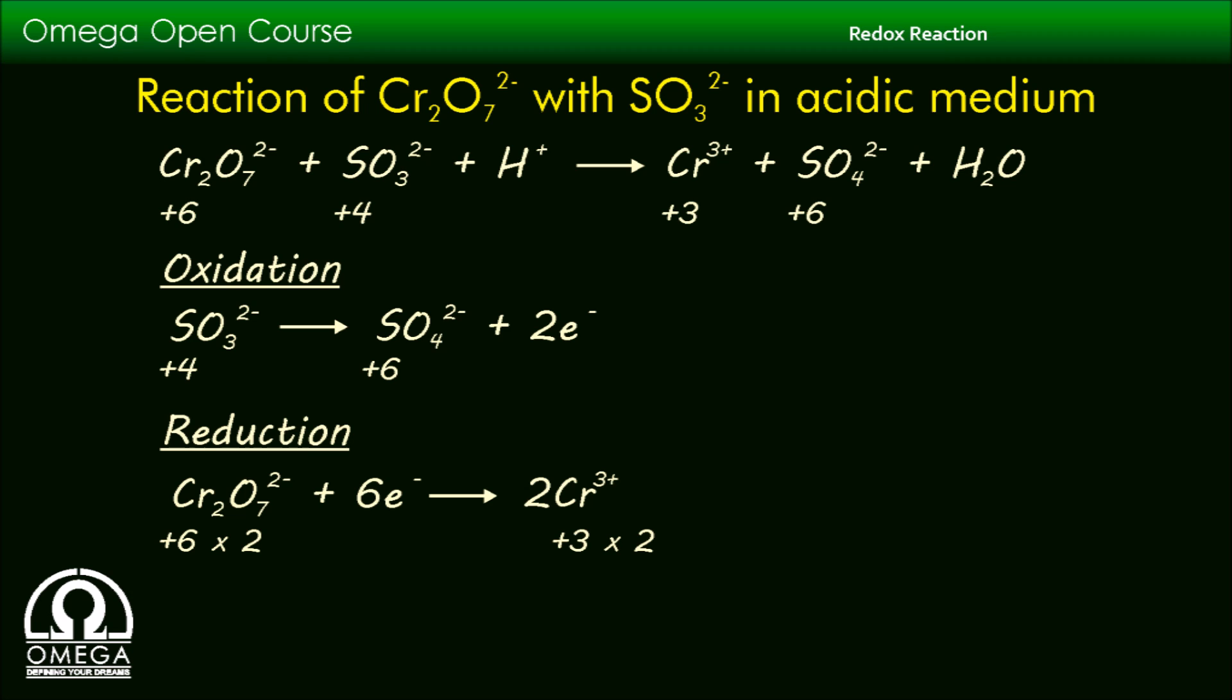Each atom absorbs three electrons and the oxidation number of chromium atom decreases from +6 to +3. Therefore the total number of electrons absorbed in reduction becomes 6. Do not forget to write two Cr^3+ ions on the product side. Students generally commit this error and write only one Cr^3+ ion on the product side.